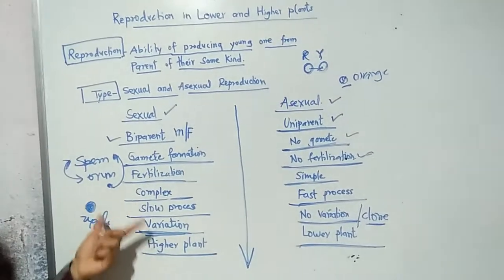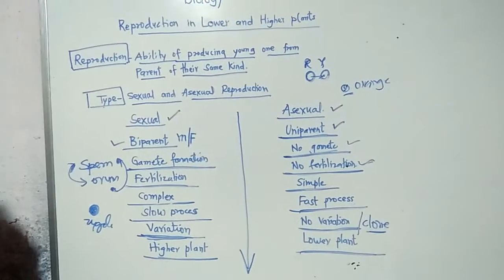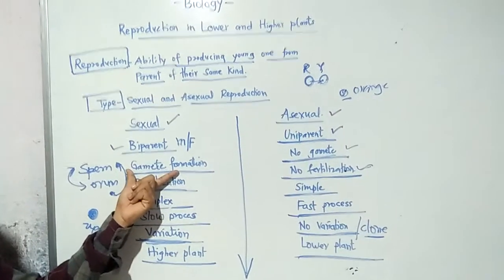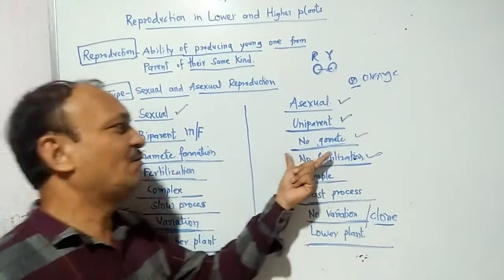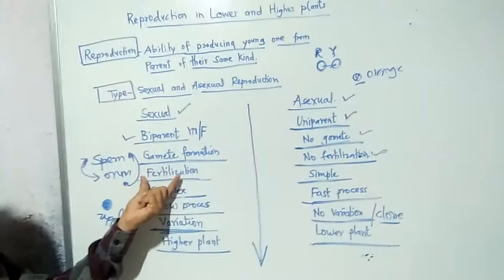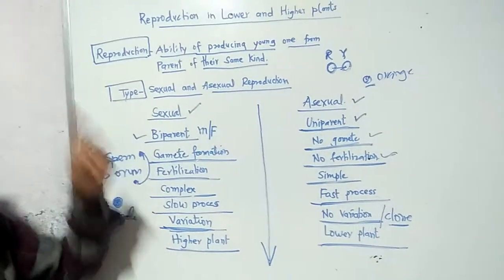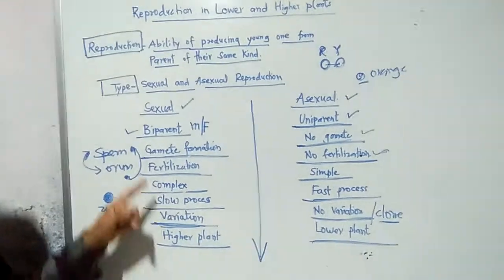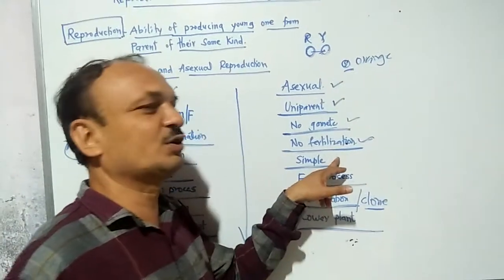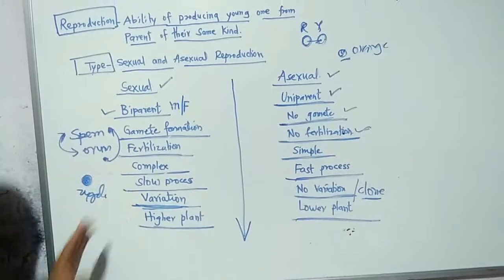After meiosis, gametes are formed. Gametes are the reduction division products of the genetic material. Gamete formation is needed in sexual reproduction whereas in asexual there is no gamete formation. Fertilization occurs when the union of male and female gametes takes place. There is no need for fertilization in asexual reproduction.